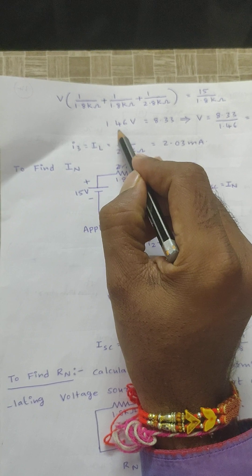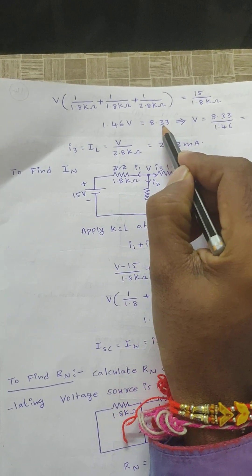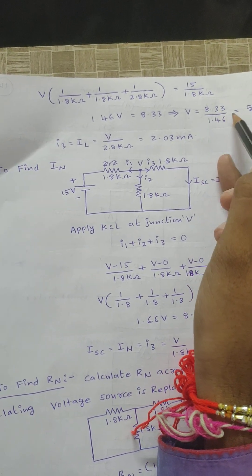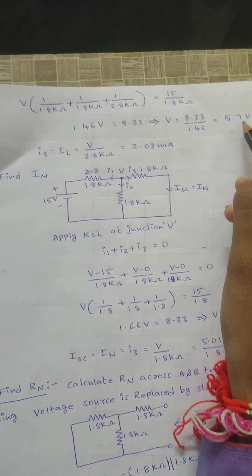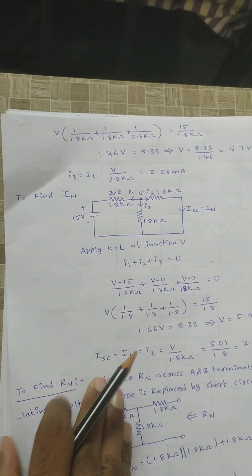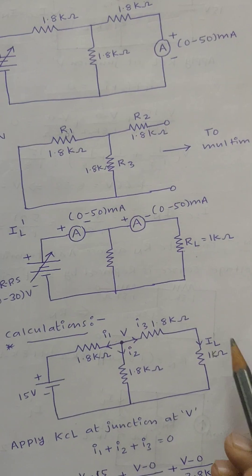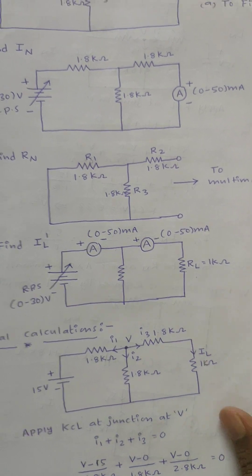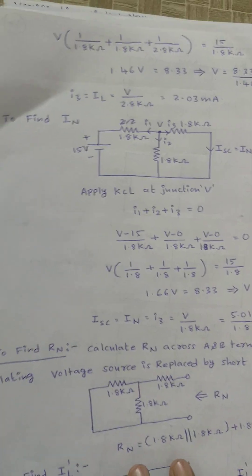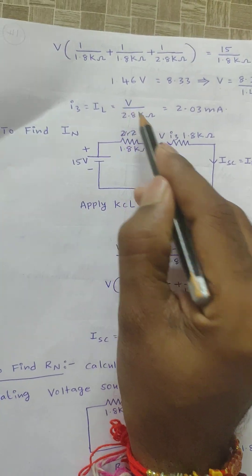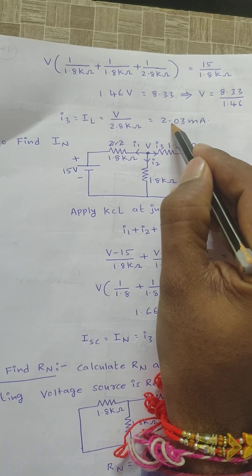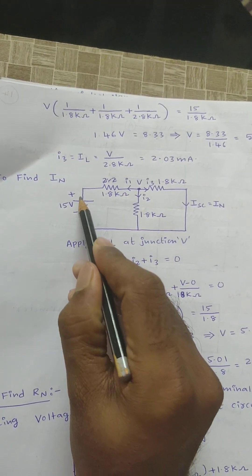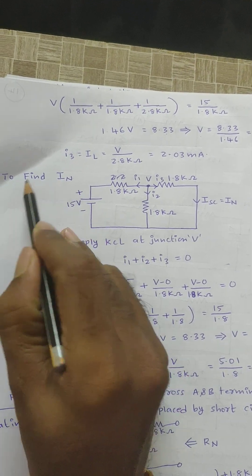Simplifying this equation gives 1.46V = 8.33 volts, so node voltage V = 8.33 / 1.46 = 5.7 volts. The current through the load resistance is IL = I3 = V / 2.8 kΩ = 5.7 / 2.8 kΩ, giving a load current of 2.03 milliamperes.